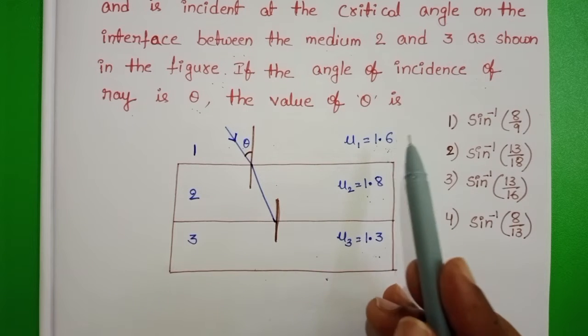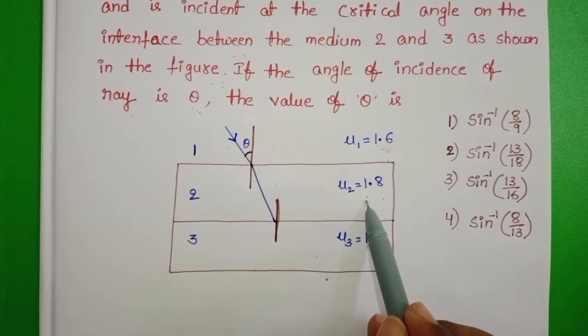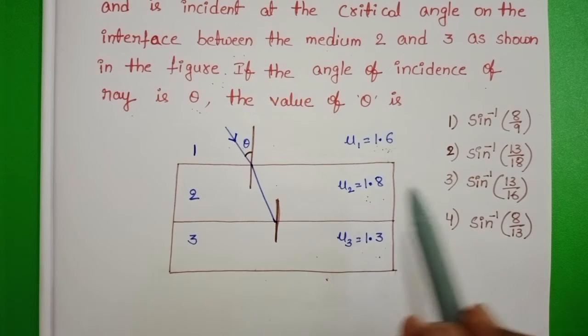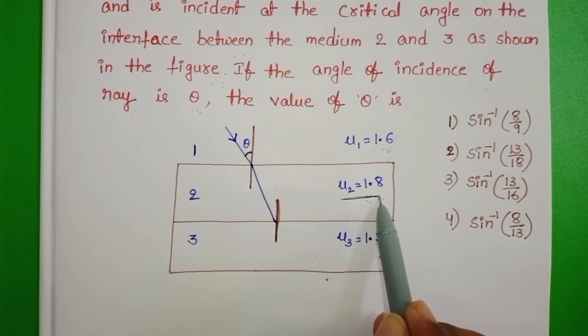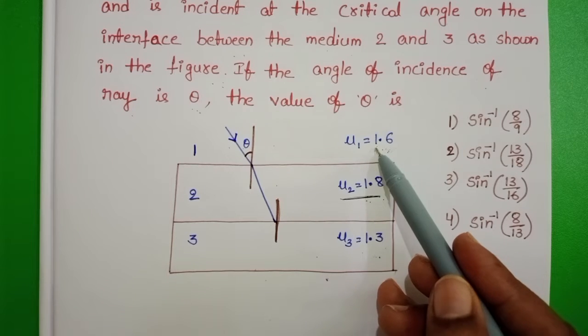First medium behaves like rarer medium and second medium behaves like denser medium. Why? Because the refractive index of the second medium is greater than the first medium.